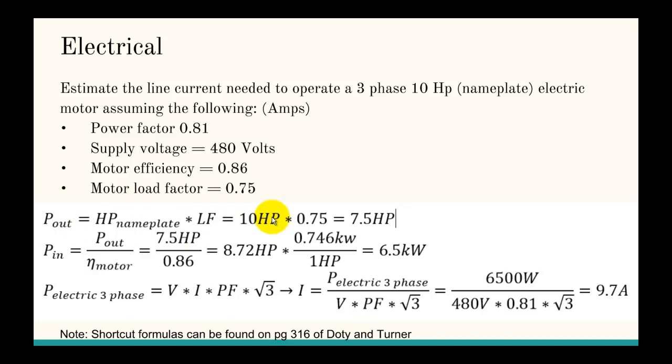So, the output power of this motor is the nameplate horsepower times the motor load factor. And then, to get the input power, you divide by the motor efficiency. So, you divide the output power by the motor efficiency. And, in this case, I just converted that to kilowatts.